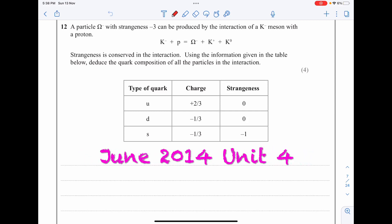Hi guys and welcome to our YouTube channel. Today we have question 12 from June 2014. A particle Ω⁻ with strangeness minus three can be produced by interaction of a K⁻ meson with a proton. Strangeness is conserved in the interaction.